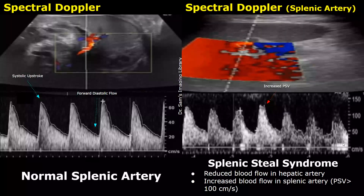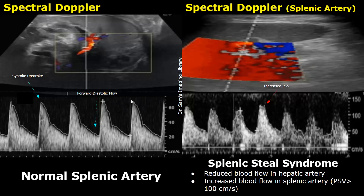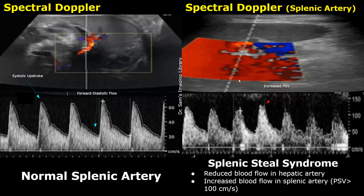This image shows a normal spectral Doppler waveform of the splenic artery: there is a sharp systolic peak followed by forward diastolic flow. The image on the right shows the spectral Doppler waveform of the splenic artery in a case of splenic steal syndrome. The PSV is increased — it is almost 150 centimeters per second — whereas in the normal image it is just over 60 centimeters per second. Flow is increased in the splenic artery, as if the splenic artery steals the blood from the hepatic artery.